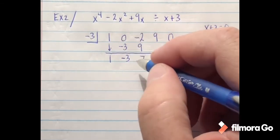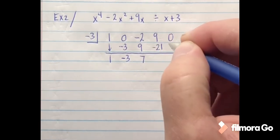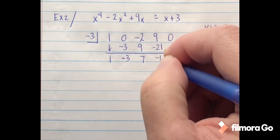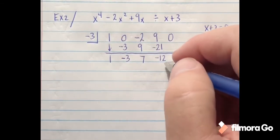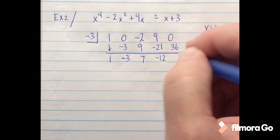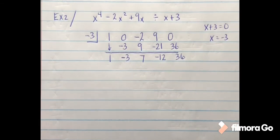That gives me 7 when I add those together. Negative 3 and 7 gives me negative 21. 9 and negative 21 gives me negative 12. Then negative 3 and negative 12 gives me 36.